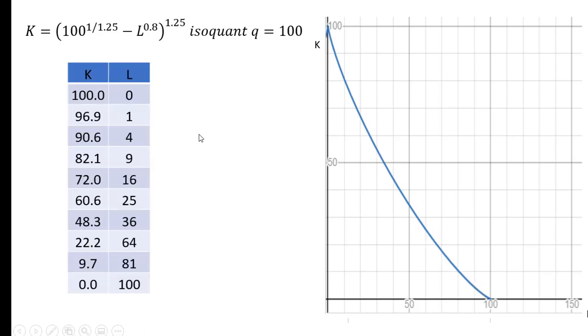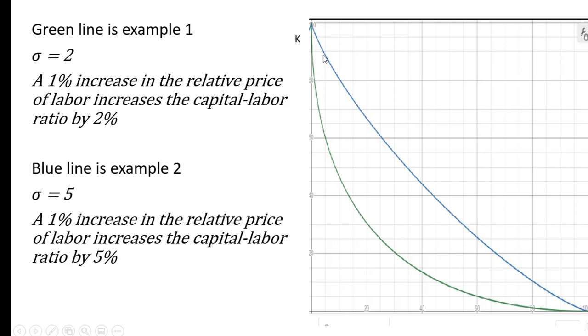Let's put both curves on the same diagram. So the green line is example one, where the elasticity of substitution is two. Here a 1% increase in the relative price of labor increases the capital labor ratio by 2%.